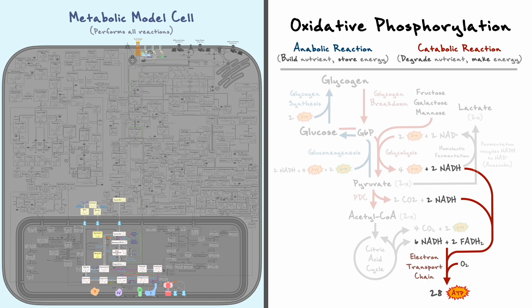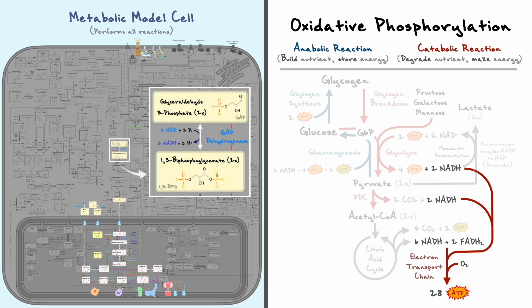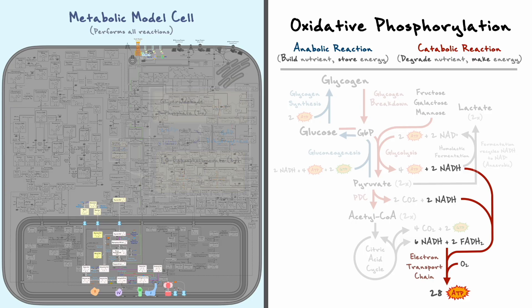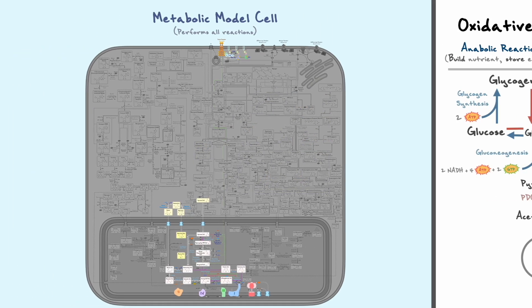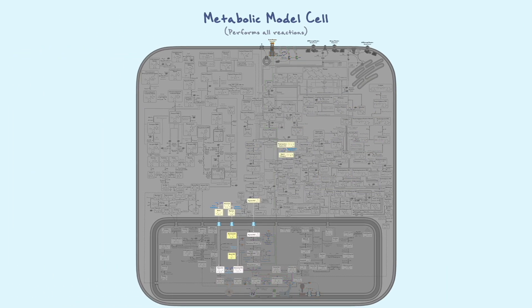One caveat with this entire process, however, is that the NADH produced by glycolysis is made in the cytosol, but the electron transport chain is located in the mitochondrion. Given that the mitochondrion is impermeable to NADH, we need to first consider some mechanisms that the cell has put in place to overcome this problem.